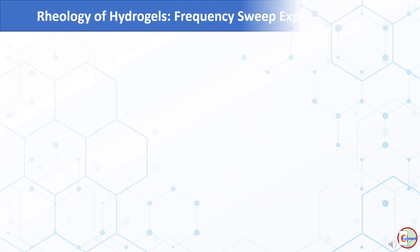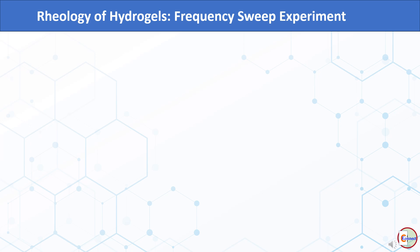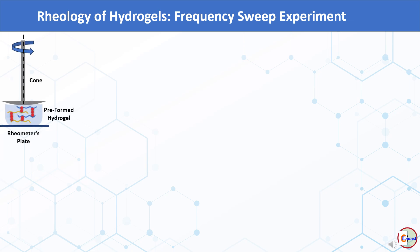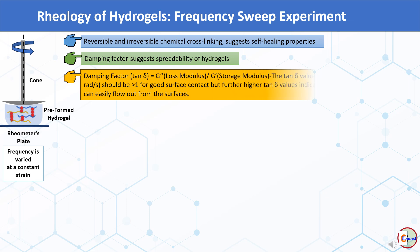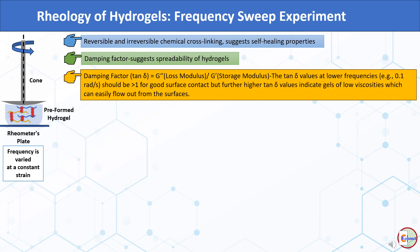The next type of rheology study is frequency sweep, also conducted on preformed hydrogels. Frequency is varied at a constant strain and both moduli are recorded. Frequency sweep rheograms reveal reversible and irreversible chemical cross-linking and suggest self-healing properties. They also allow calculation of the damping factor, which suggests spreadability. The damping factor — tan delta — is the ratio of loss modulus to storage modulus. A damping factor higher than one at lower frequencies indicates good surface contact, but very high tan delta values indicate gels of low viscosity that can easily flow off surfaces.